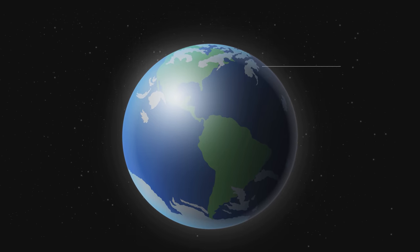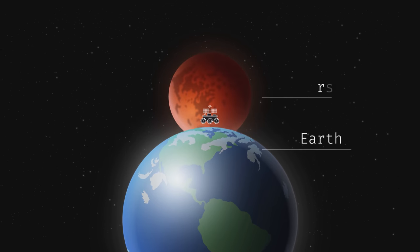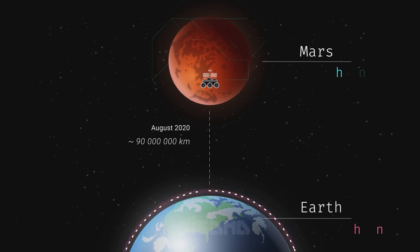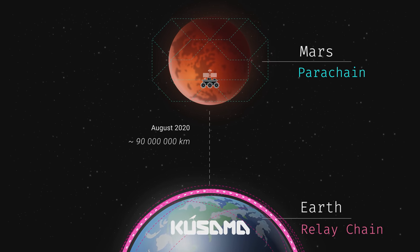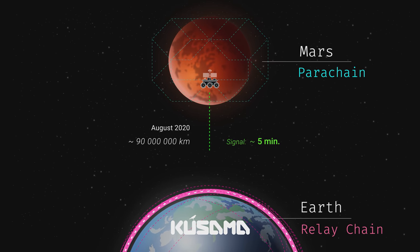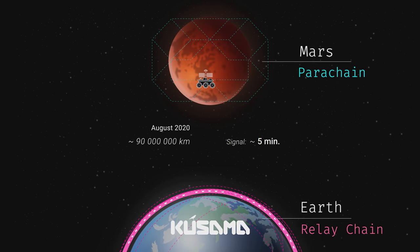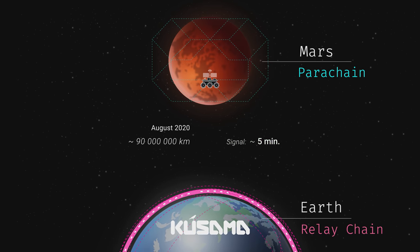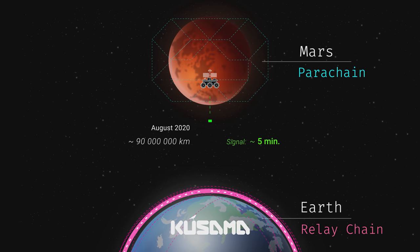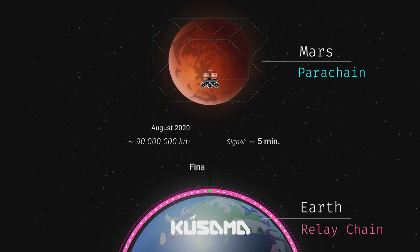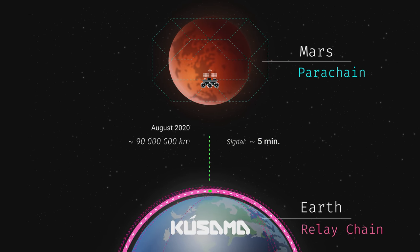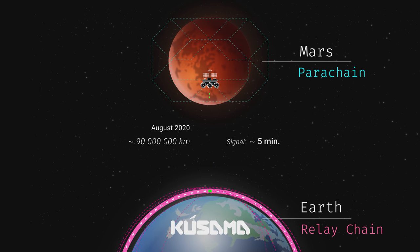An architecture impossible without Kusama. In this video, we will demonstrate an experiment using the ability of parachains to have their own block time. The Kusama architecture allows a dedicated blockchain to live on Mars on its own and at the same time provides other blockchains on Mars to communicate with it. Kusama will allow finalization of data from Mars on Earth and communication with Mars through transactions from other parachains using XCMP.